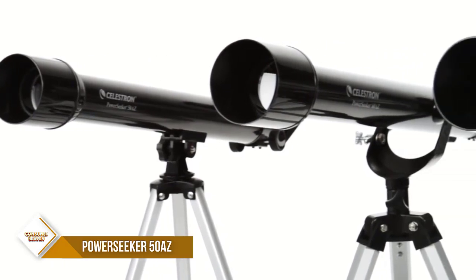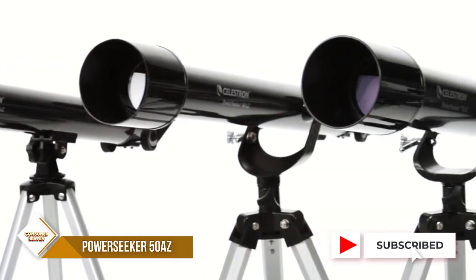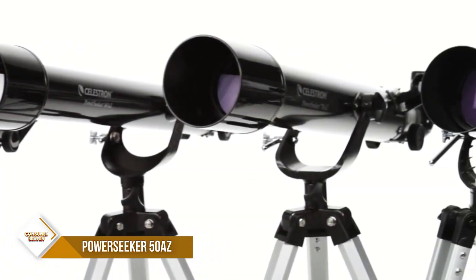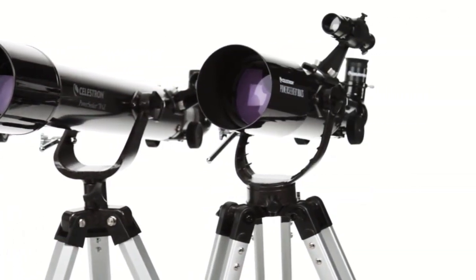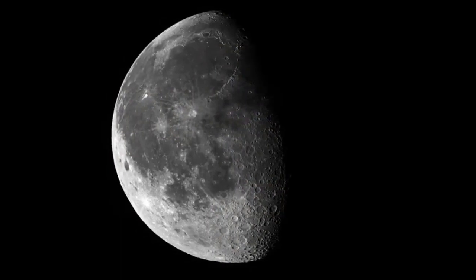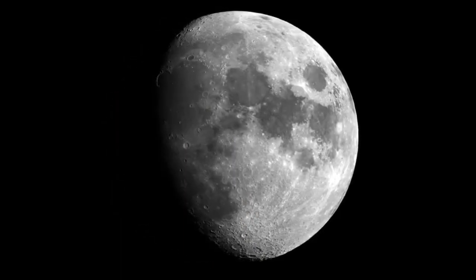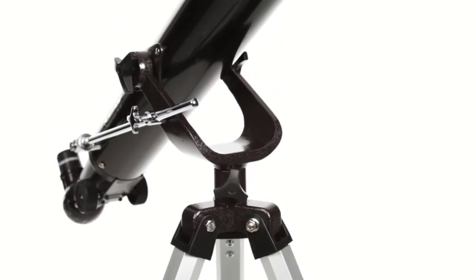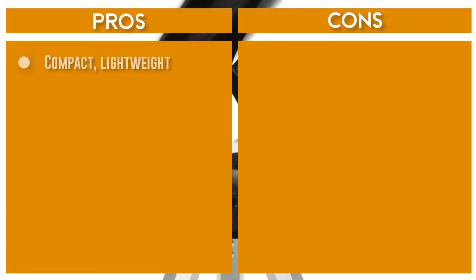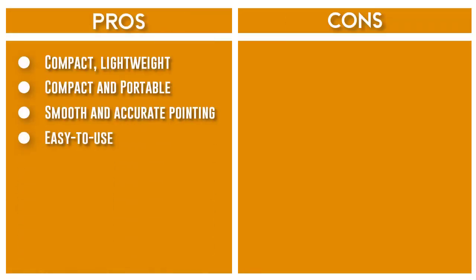It comes with 4 eyepieces: 20mm, 12mm, 4mm, and 1.5x image-erecting eyepiece, a star diagonal, a finderscope, plus a 3x Barlow lens to triple the power of each. Accessories also include a free download of one of the top consumer-rated astronomy software programs. With the Celestron PowerSeeker 50AZ Telescope, you can navigate the night sky with ease and explore the wonders of the universe.